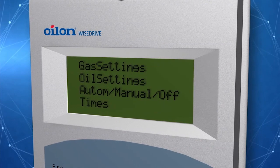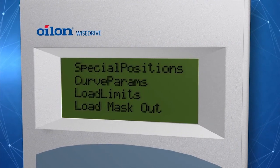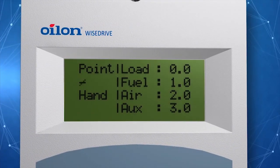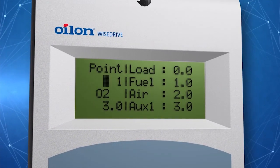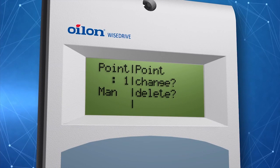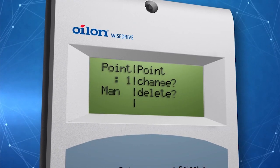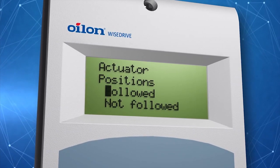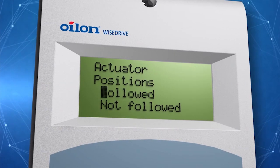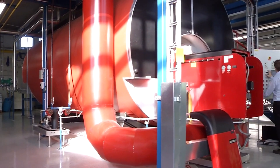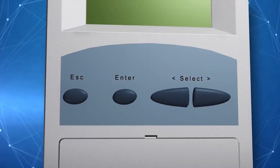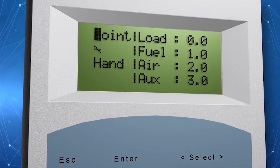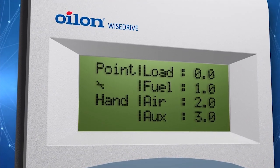Now you can set the curve points. Enter the submenu for the curve parameters. Press enter to set the first curve point, and press enter again to select change to modify the point data. When the system asks about the actuator position, choose followed. This means the actuators will follow the changes made to the point data in real time. The display shows current servo motor positions in degrees, frequency converter control, and capacity in percentages.